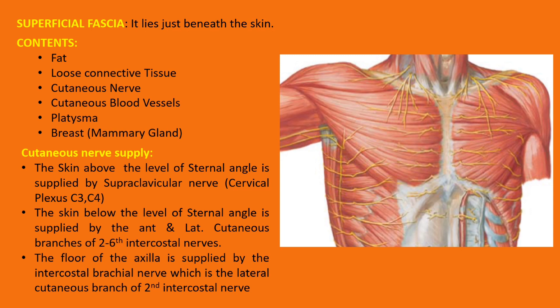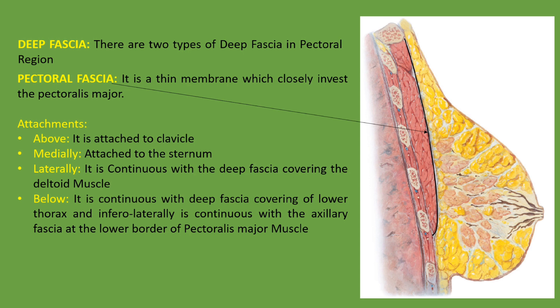Now let's talk about the deep fascia. There are two types of deep fascia: one is the pectoral fascia and another is the clavipectoral fascia. The pectoral fascia is a thin membrane which closely invests the pectoralis major muscle. Regarding its attachments: above it is attached to the clavicle, medially it is attached to the sternum, laterally it continues with the deep fascia covering the deltoid muscle, and below it continues with the deep fascia of the abdomen.